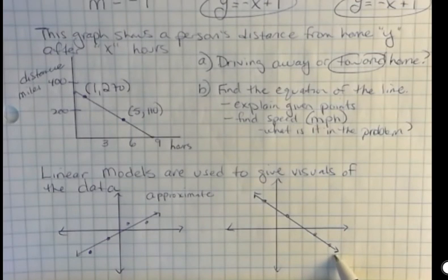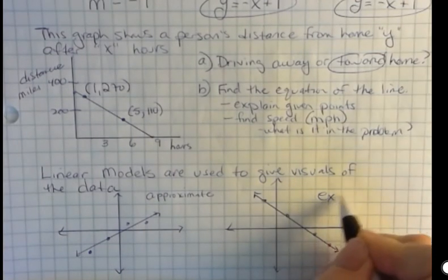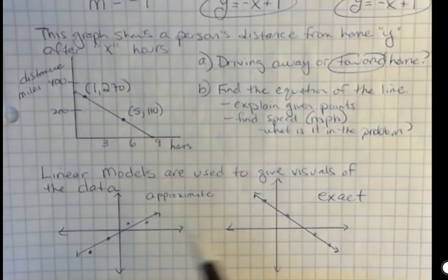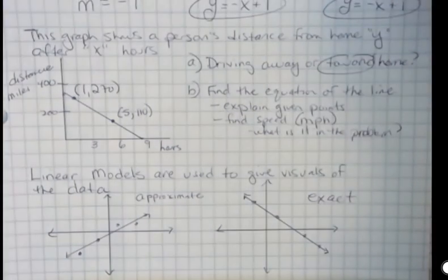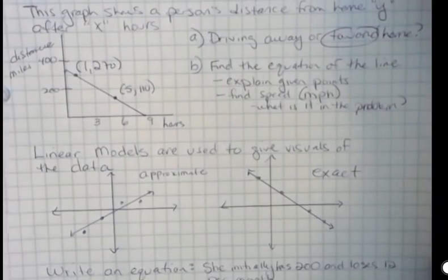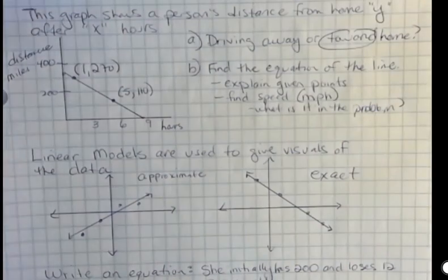But if we do plot points, and they are making an exact line, that's an exact linear model. And we can use linear models, even if they're approximate, that can still give us some predictions, allow us to make predictions. If it's exact, obviously we can. So we love exact models, but we also use approximate all the time.